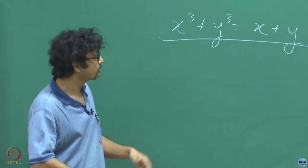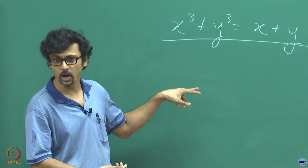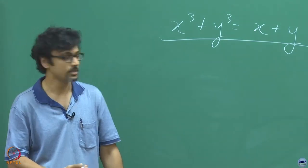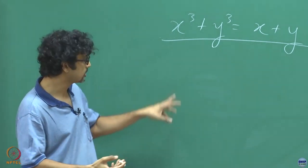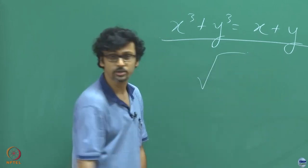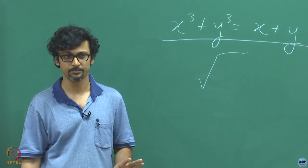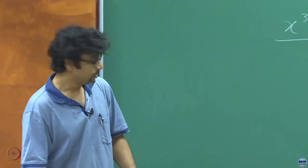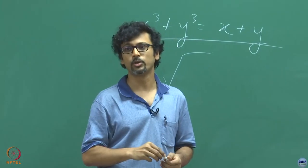If you substitute all possible rational values for the parameter — the ratio of x to y — not every value would work. Only those values for which the entry inside the square root is a perfect square of a rational number will work. Please try this; it is very important, particularly because subsequently we shall be talking about what kind of solutions we are looking for.